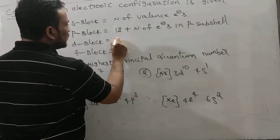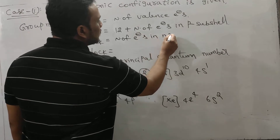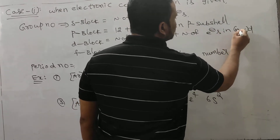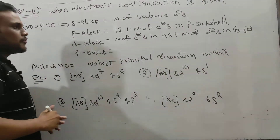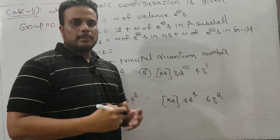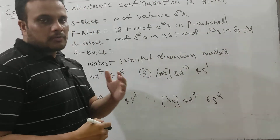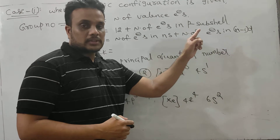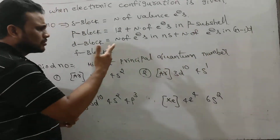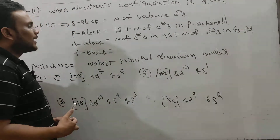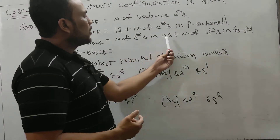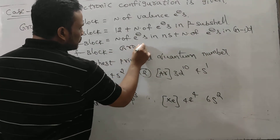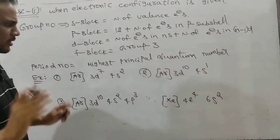And when it comes to D-block, group number is simply the number of electrons in the NS subshell plus that in the (N−1)D subshell. In D-block elements, the final differentiating electron enters the penultimate D subshell. After filling the NS valence shell, the electron enters (N−1)D, the penultimate D subshell. That's the trick to find the group number for D-block. For F-block elements, no need to confuse — all F-block elements belong to group 3. That is fixed.